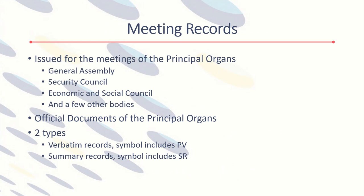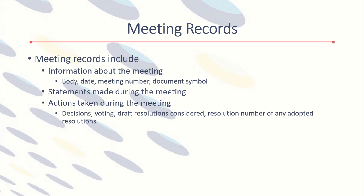To recap: meeting records are issued for the principal organs and for some subsidiary bodies, as verbatim records and summary records. Meeting records include information about the meeting, statements made during the meeting, and information about actions taken.